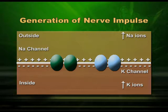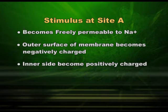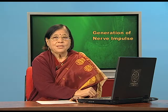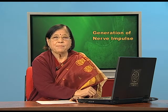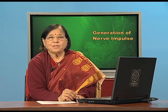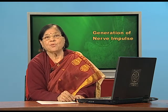In the previous session we said polarized condition refers to a resting cell. Now it is no more resting — stimulus is provided on the membrane and changes have taken place. At that particular point, the outer membrane has become negatively charged and inside has become positively charged. The positively charged ions become freely movable toward the inner side and negatively charged ions move toward the outer side.